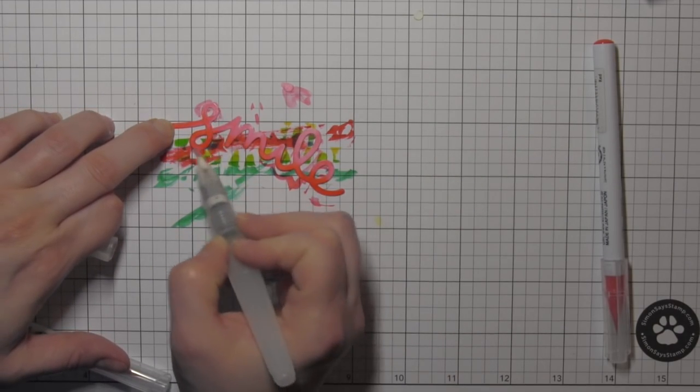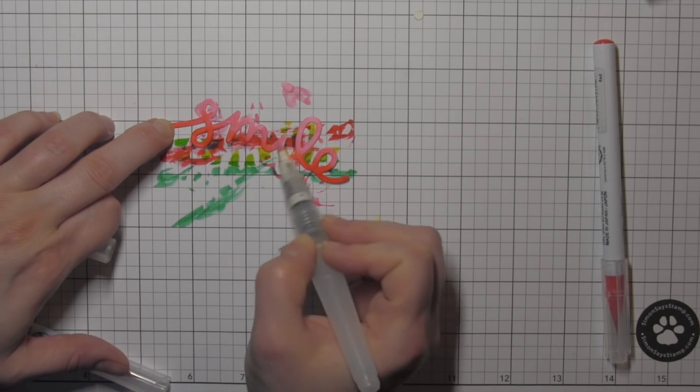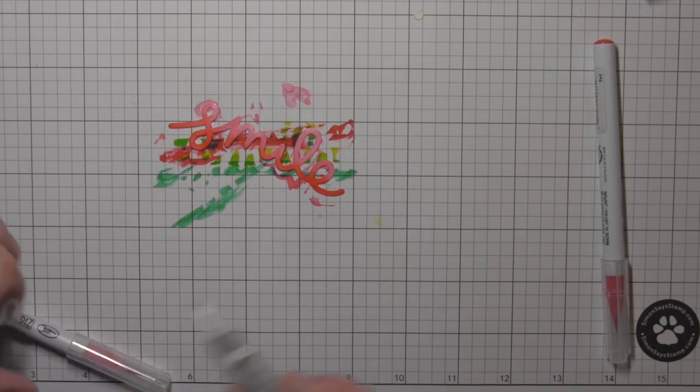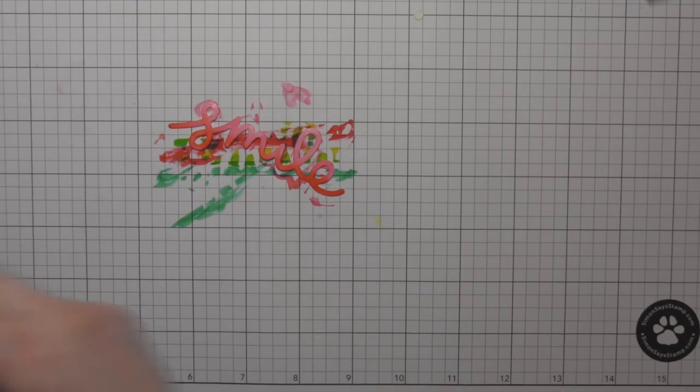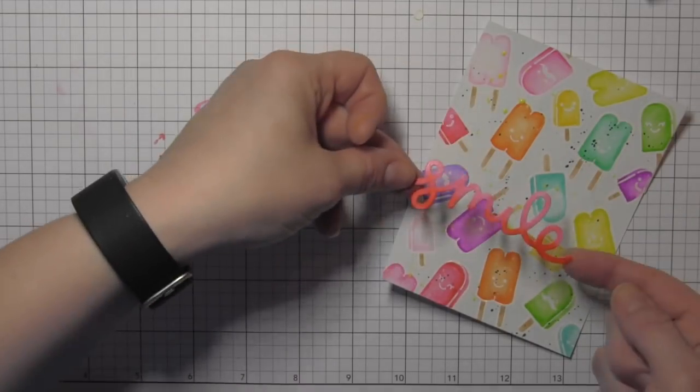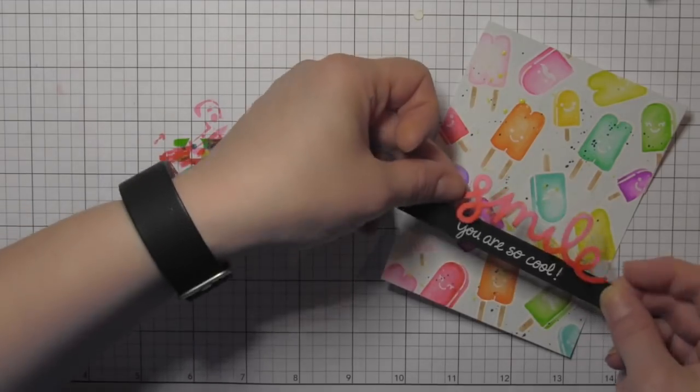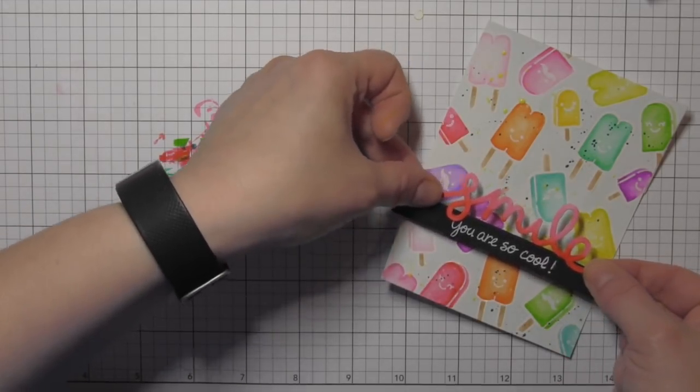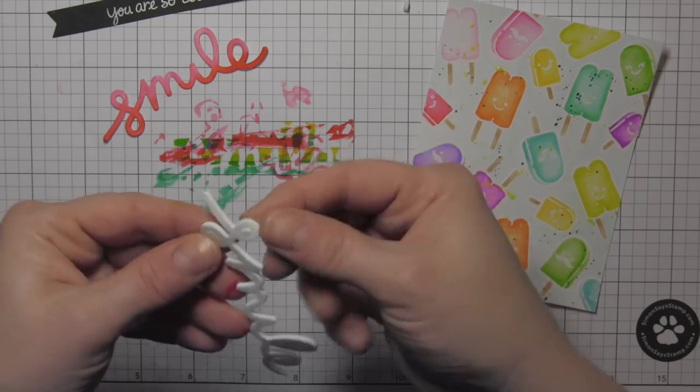Once it's completely colored, I'm going to go ahead and set that aside again to dry. You could hit it with your heat tool if you want it to dry a little bit quicker. Then I'll go ahead and grab my card and banner, and I am ready to put it all together.